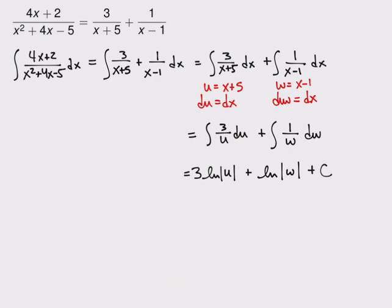And then finally rewriting everything in terms of x now, I get 3 times the natural log of, and I know what u is, it's x plus 5, and I know what w is, it's x minus 1, plus an unknown constant.